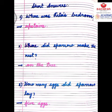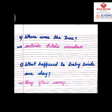Where was Rita's bedroom? Upstairs. Where did the sparrow make the nest? On the tree. How many eggs did the sparrow lay? Five eggs. Where was the tree? Outside Rita's window. What happened to the baby birds one day? They flew away. Please write these questions in your copy.